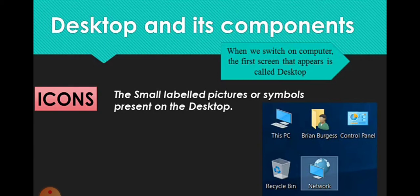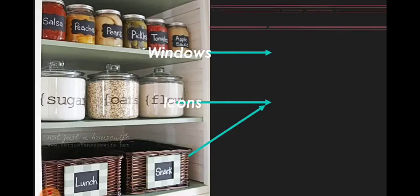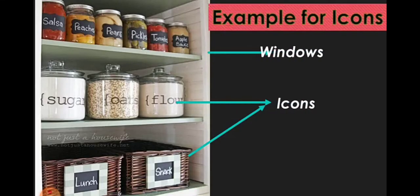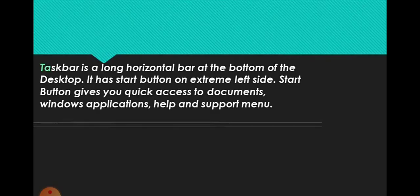Icons are the small images which briefly describe a file or a program. In the computer, there are various types of boxes and ports. Ports, windows, and icons are all components. The windows are the major screen areas and icons are the small pictures.